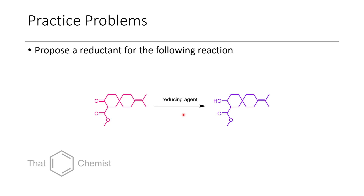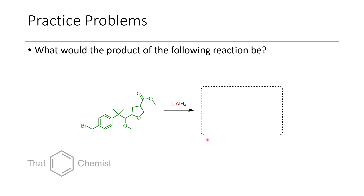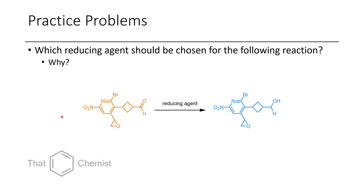For this lecture, I'd like to assign three practice problems. First, propose a reductant for the following transformation — which reducing agent would give you this alcohol? Second, if you were to take this substrate and treat it with lithium aluminum hydride, what would the product of the reaction be? Third, for the substrate shown, what reducing agent should you use to get this alcohol, and what are some possible concerns that this molecule could have that would inspire your choice of reducing agent?